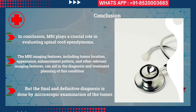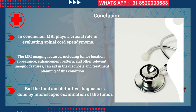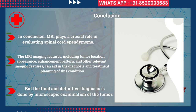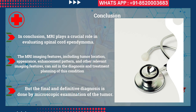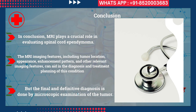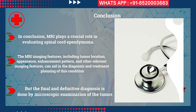In conclusion, MRI plays a crucial role in evaluating spinal cord ependymoma. The MRI imaging features — including tumor location, appearance, enhancement pattern, and other relevant imaging features — can aid in the diagnosis and treatment planning of this condition. However, the final and definitive diagnosis is done by microscopic examination of the tumor.